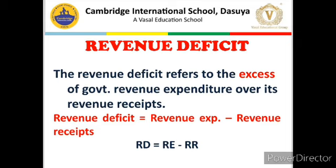Revenue Deficit refers to the situation when Revenue Expenditure is greater than Revenue Receipt of the Government. The formula is: Revenue Deficit = Revenue Expenditure minus Revenue Receipt. Revenue Receipt consists mainly of Tax Receipts and Non-Tax Receipts, with Tax Receipts being the dominant part. Revenue Expenditure covers the functioning of the Government. A Revenue Deficit indirectly indicates that tax collection is less while Government spending on its own functioning is more.